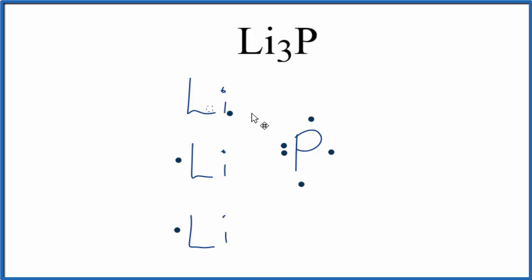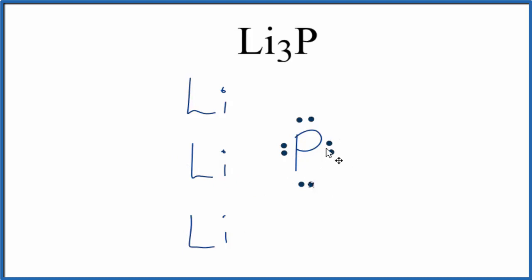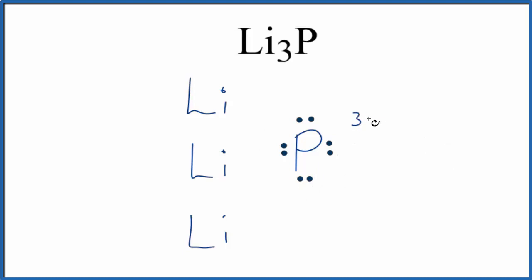Each lithium transfers its valence electron until phosphorus has an octet — a full outer shell, which is very stable. You can see why we need three lithiums to give this phosphorus an octet. Since phosphorus gained three electrons, and electrons are negative, it has a three minus ionic charge. Each lithium lost one electron, so it's going to become a one plus.